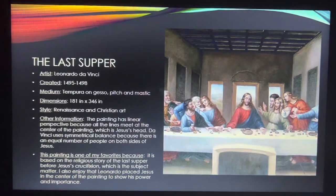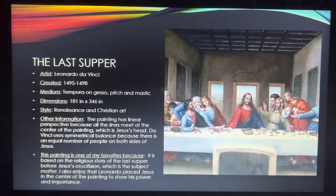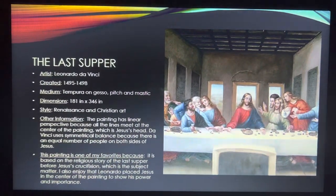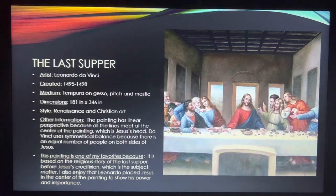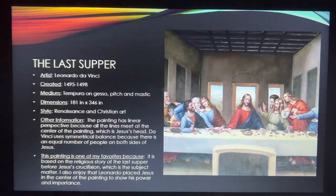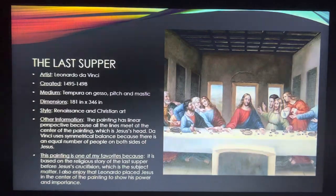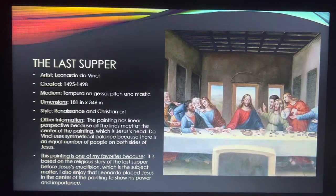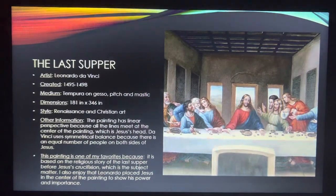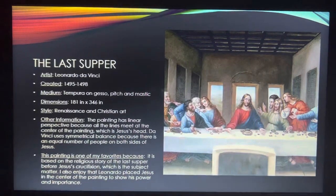The Last Supper has a linear perspective because all lines meet at the center of the painting, which is Jesus's head. Da Vinci uses symmetrical balance because there is an equal number of people on both sides of Jesus. This painting is one of my favorites because it is based on the religious story of the Last Supper before Jesus's crucifixion. I also enjoy that Leonardo placed Jesus in the center of the painting to show his power and importance.